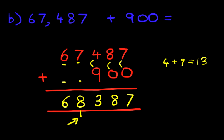And we have our answer. It is 68,387. That is correct. So that is how we do addition of five-digit numbers with hundreds using the vertical format.